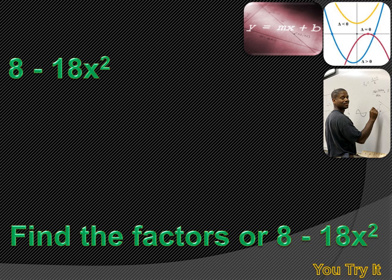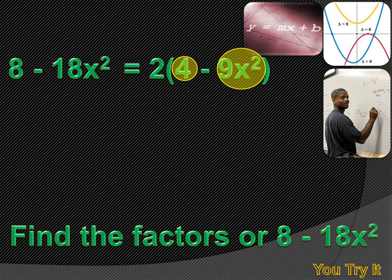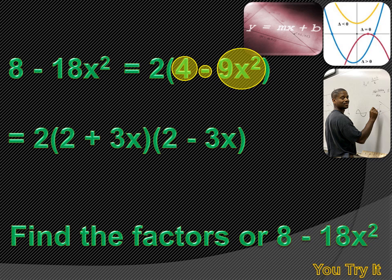I gave you a good hint. We're going to start with 8 minus 18x squared. I could factor the 8 to 2 and 4, and I could factor the 18 to 2 and 9, and I could change this expression to 2 times 4 minus 9x squared. Now 4 is a perfect square, and so is 9x squared. So I've got the difference of two squares, and I can factor that as 2 times 2 plus 3x times 2 minus 3x.